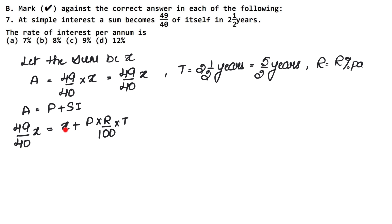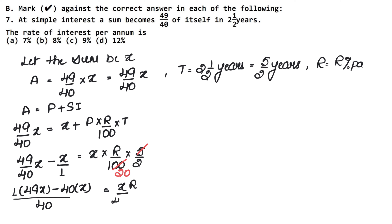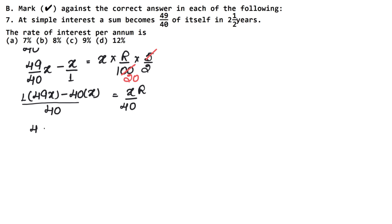Putting in the values: 49 upon 40 x minus x equals x into R into 5 upon 2, all upon 100. Taking LCM of 40: 49x minus 40x upon 40 equals xR into 5 upon 2 upon 100. This simplifies to 9x upon 40 equals xR upon 40.